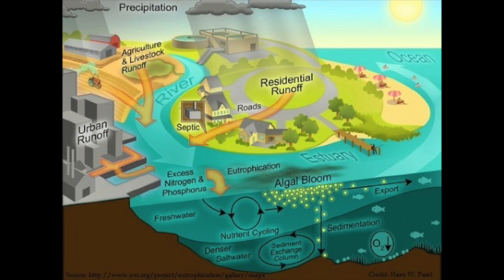Hypoxic zones can occur naturally, but scientists are concerned about the areas created or enhanced by human activity. There are many physical, chemical, and biological factors that combine to create dead zones. Nutrient pollution is the primary cause of those zones created by humans. Excess nutrients that run off land or are piped as wastewater into rivers and coasts can stimulate an overgrowth of algae, which then sinks and decomposes in the water. The decomposition process consumes oxygen and depletes the supply available to healthy marine life.